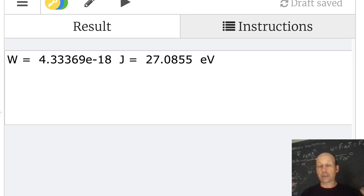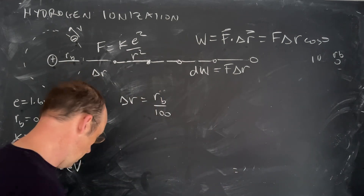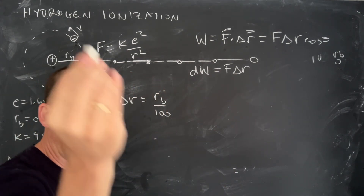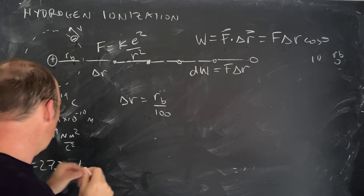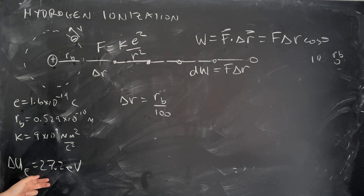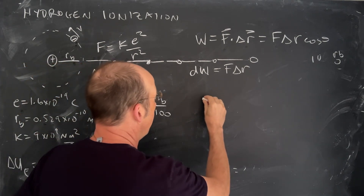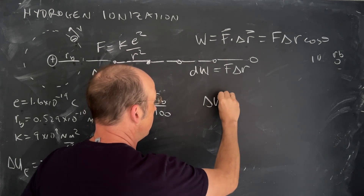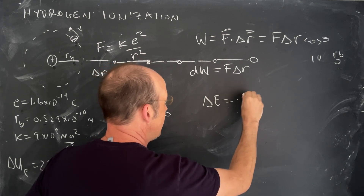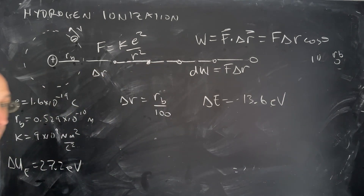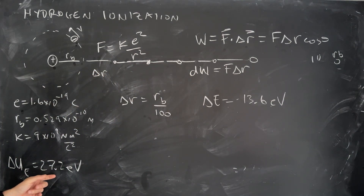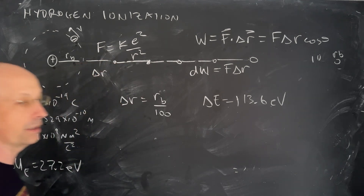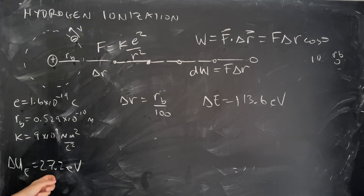Now I want to show you the magic. If you've taken chemistry, you'll know that the ionization energy for hydrogen is actually ΔE = 13.6 electron volts. And if you look at our answer of 27.2 eV, that's half. The ionization energy is positive — that's how much energy you have to supply to get the electron away — and it's half of this value. So why is it half? Why is that calculation wrong?